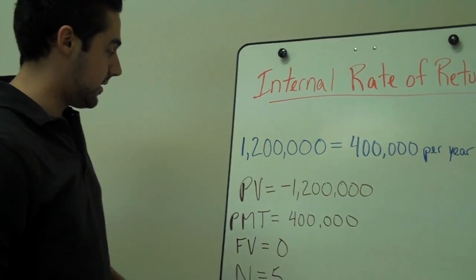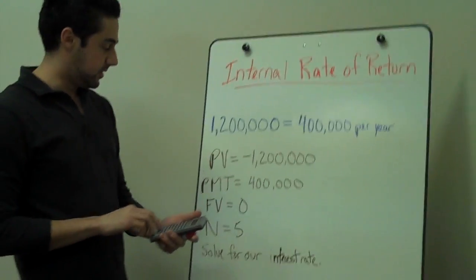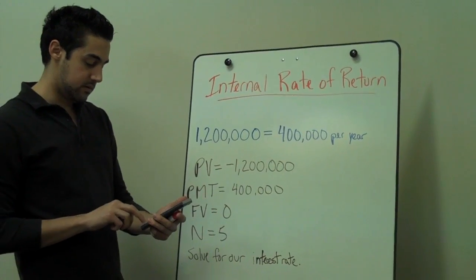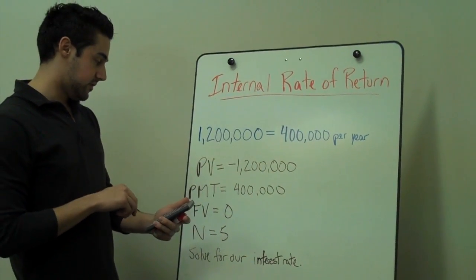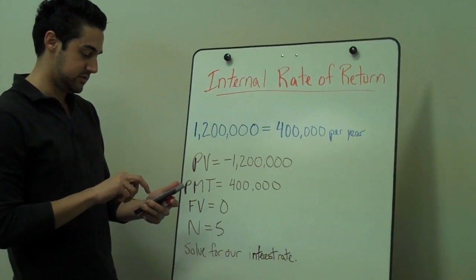So when we pick up our calculators, we are going to want to put negative $1.2 million in for the present value. For our payment, it is $400,000 a year because that is the cash flows we are getting every year if we choose to do this project.